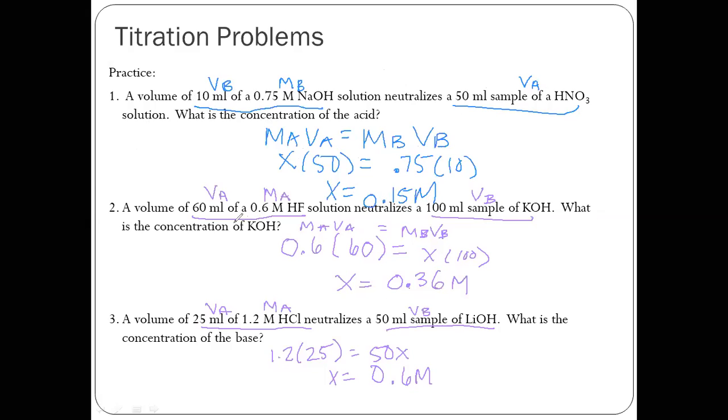Number two, 60 mils of 0.6 molar HF. So HF is the acid. So this goes 0.6 times 60 equals, we're solving for MB, X times 100. Divide both sides by 50 and you get 0.36 molar.